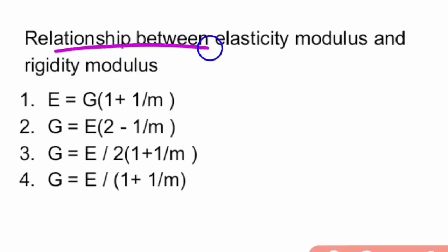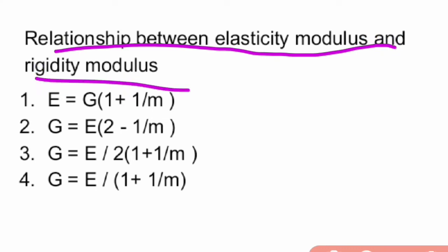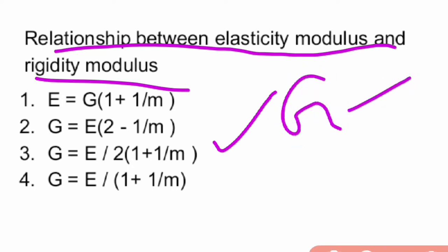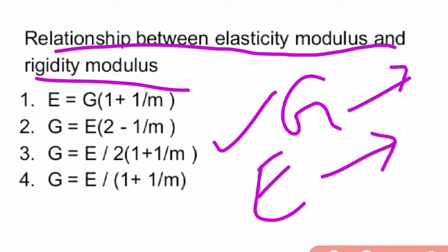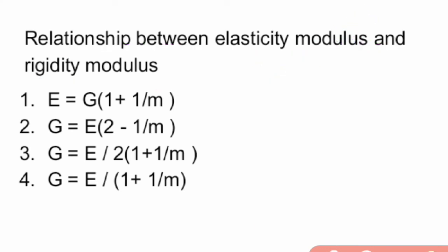Next question: what is the relation between elastic modulus and rigidity modulus? The relation is G = E / (2 × (1 + 1/m)), where G is the modulus of rigidity, E is the modulus of elasticity, and 1/m is Poisson's ratio.